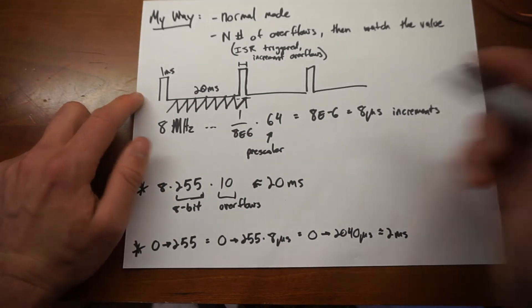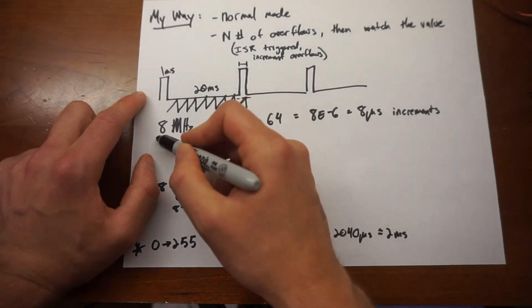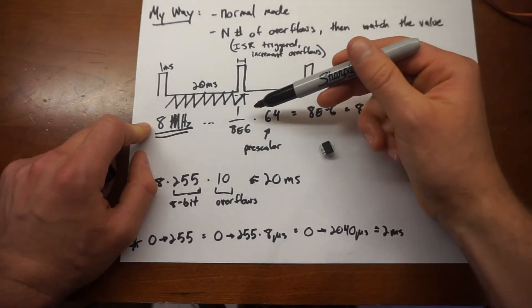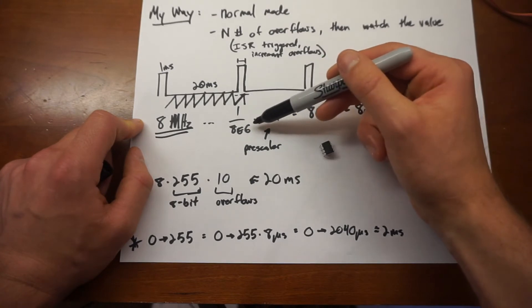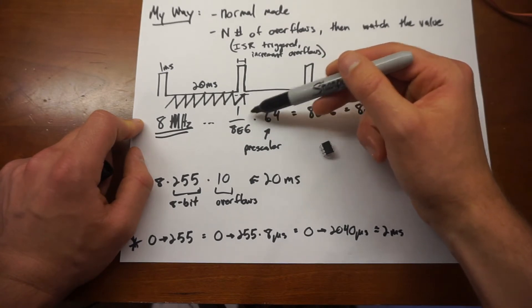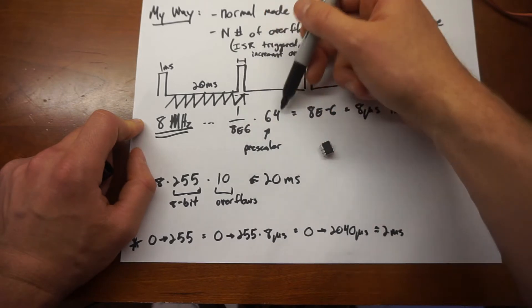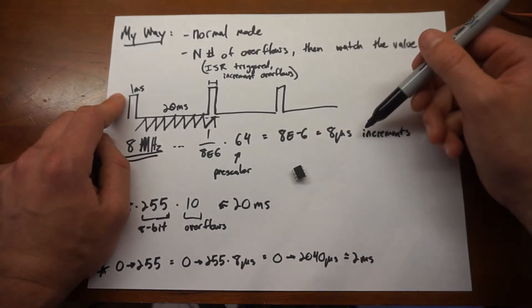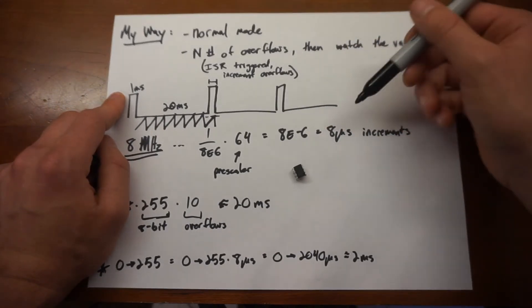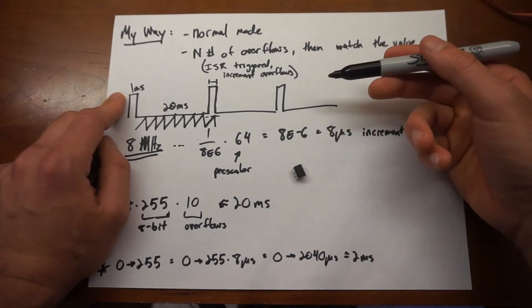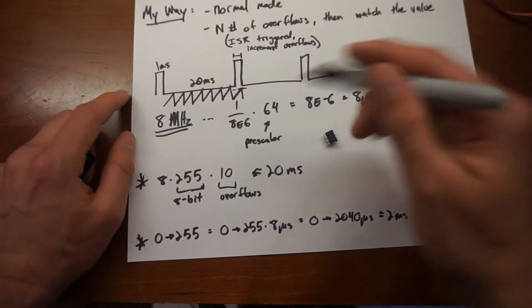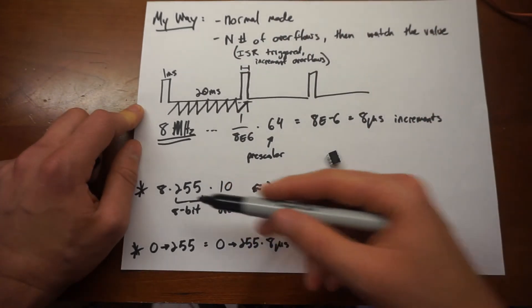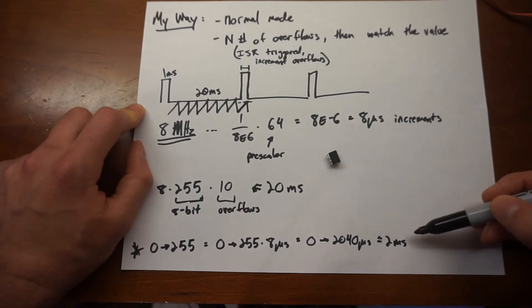So let's talk about this more concretely, numerically. We have an 8 megahertz timer on the ATtiny. If we do 1 divided by 8 times 10 to the 6, we get something sub-microsecond, so then we're going to multiply that by 64, a pre-scale factor of 64, to get us to 8 microseconds. So that corresponds to 8 microsecond increments for when the timer is incremented. So what's a full period of our 8-bit timer then? It's 8 times 255, which is approximately 2 milliseconds.